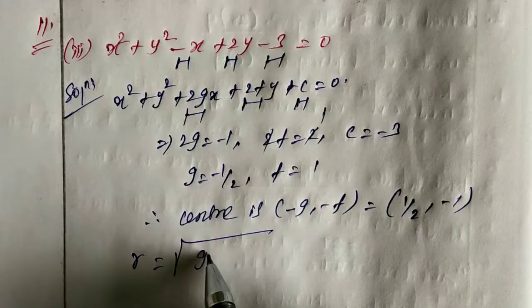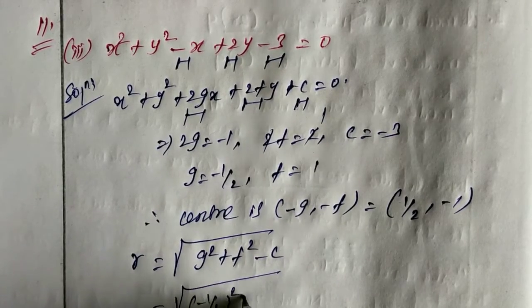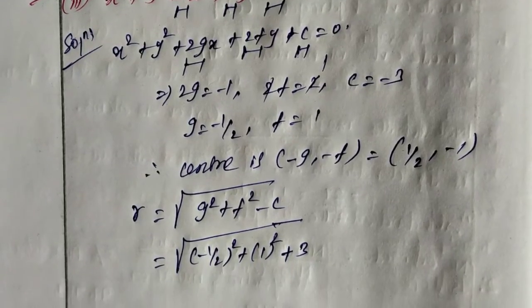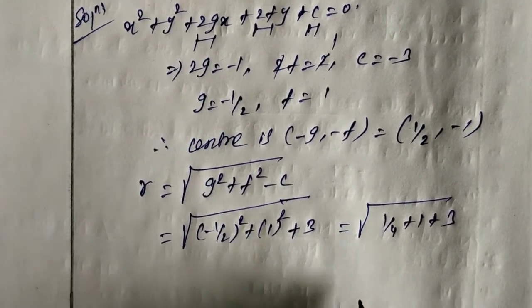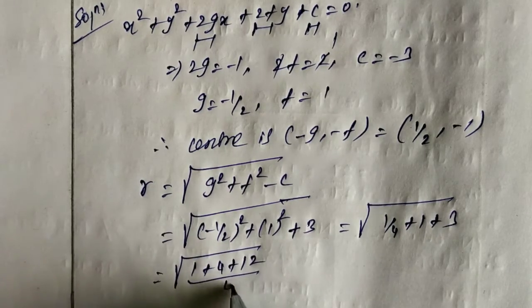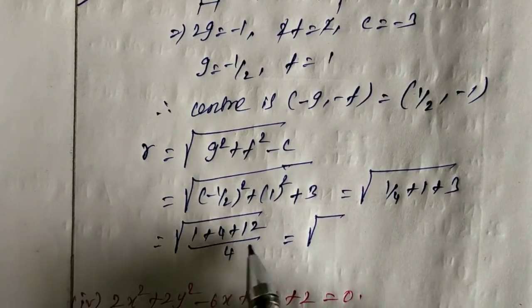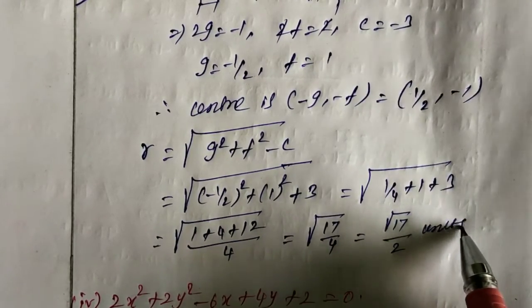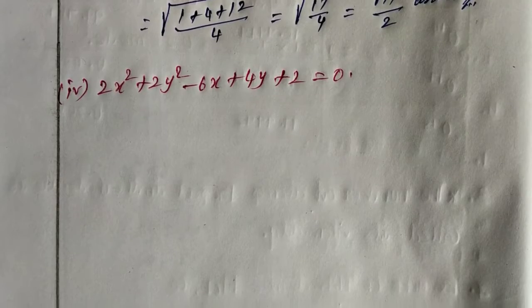Radius r equals square root of g squared plus f squared minus c. Square root of minus 1 by 2 whole squared plus 1 squared minus minus 3, which is plus 3. So square root of 1 by 4 plus 1 plus 3. Taking LCM 4: square root of 1 plus 4 plus 12 all over 4, equals square root of 17 by 4, which equals square root of 17 by 2 units. This is the radius.